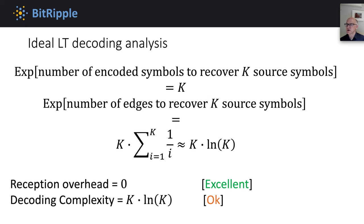The ideal LT decoding analysis shows that the expected number of encoded symbols needed to recover the K source symbols is exactly K. The expected number of edges to recover the K source symbols is exactly the same as it was for copy decoding. Thus, the reception overhead for ideal LT decoding is 0, which is excellent, and the decoding complexity is K times log K. This is an analysis of ideal LT decoding, where at each step we assume exactly the expected behavior occurs. In practice, variances from expectation mean that tweaks are needed to adjust the degree distribution to achieve reasonable reception overheads. However, the ideal LT decoding analysis does give intuitive insight into the design of the degree distribution and why LT codes work well.